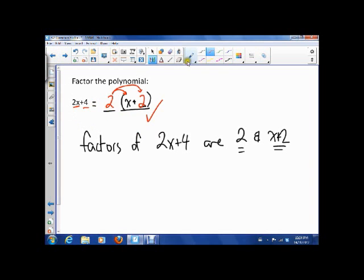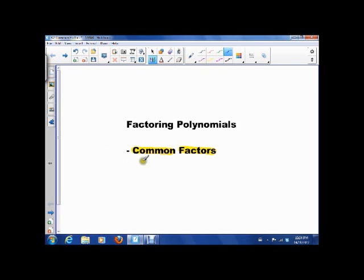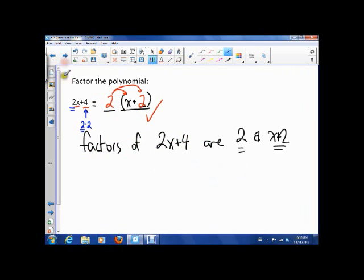Well I want you to look back here and see how I decided to put a 2 out here. Well you see that there's a 2 in here and also that 4 is actually 2 times 2. So there's a 2 in there as well. So I want you to look back at the title of the lesson and it's called Common Factors. So what we're doing is we're trying to see is there a common factor in each one of these terms that I can factor out.